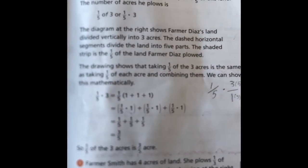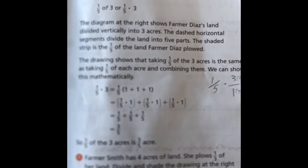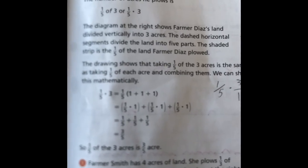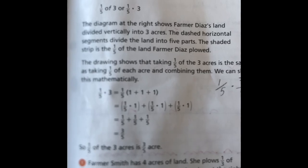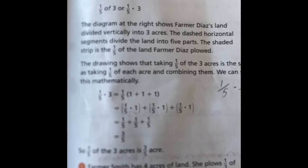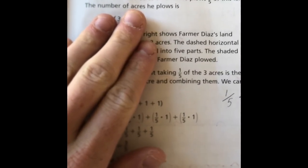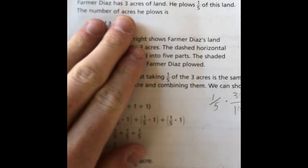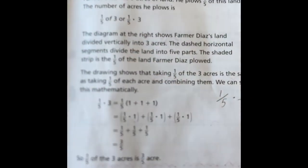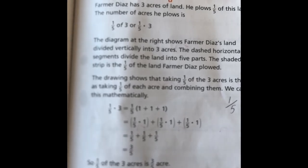The problem that we're going to be looking at that I'll model with you guys is at the top of page 89 and it's about Farmer Diaz. Farmer Diaz has three acres of land and he plows one-fifth of this land. Based on what that says, what type of problem do we think this is? Yes, Claire, this is a multiplication problem.